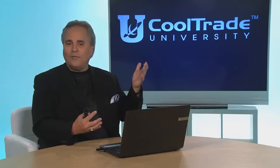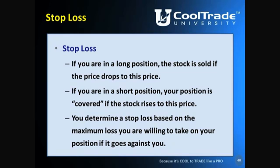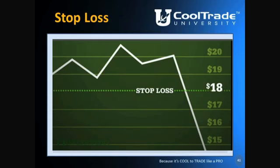On the chart you can see the stock move from $19 to over $20, then drop off. You might put a stop loss at $18, and at that point the stock sells — even if it drops to $15 or zero, you've limited the loss. In a short position, if you sold at $10 expecting it to go down but it goes up to $11 or $12, you buy it back to cover your position. You determine your stop loss based on your maximum acceptable loss.